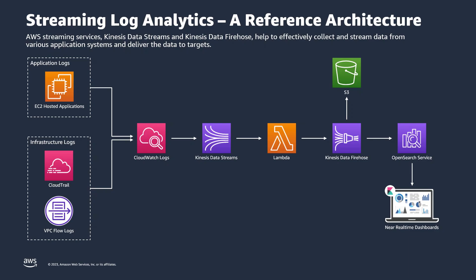This reference architecture diagram illustrates an effective logging solution that uses AWS Streaming Services. This solution collects two types of logs: application logs and infrastructure logs. The logs are delivered to the Amazon CloudWatch service. Note that application logs can be delivered by a CloudWatch agent or a Kinesis agent. Next, the CloudWatch log events stream to Kinesis Data Streams.